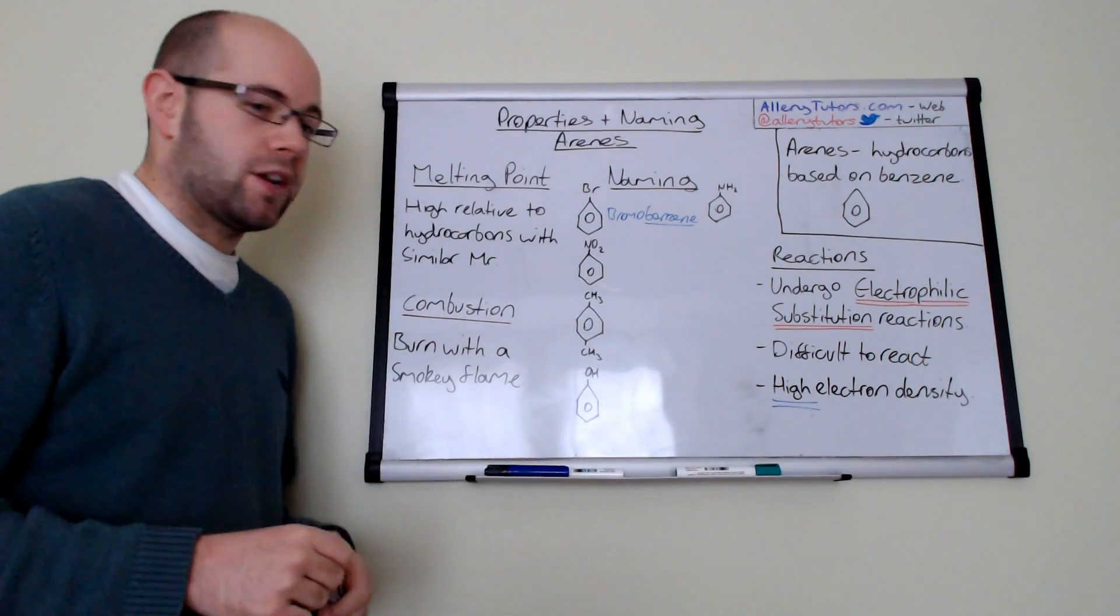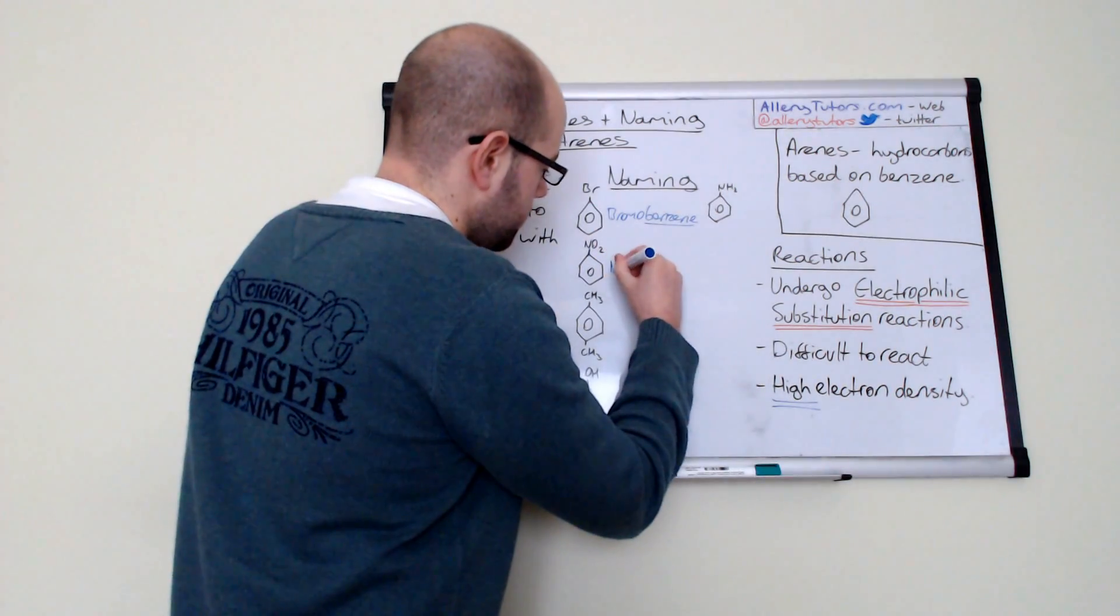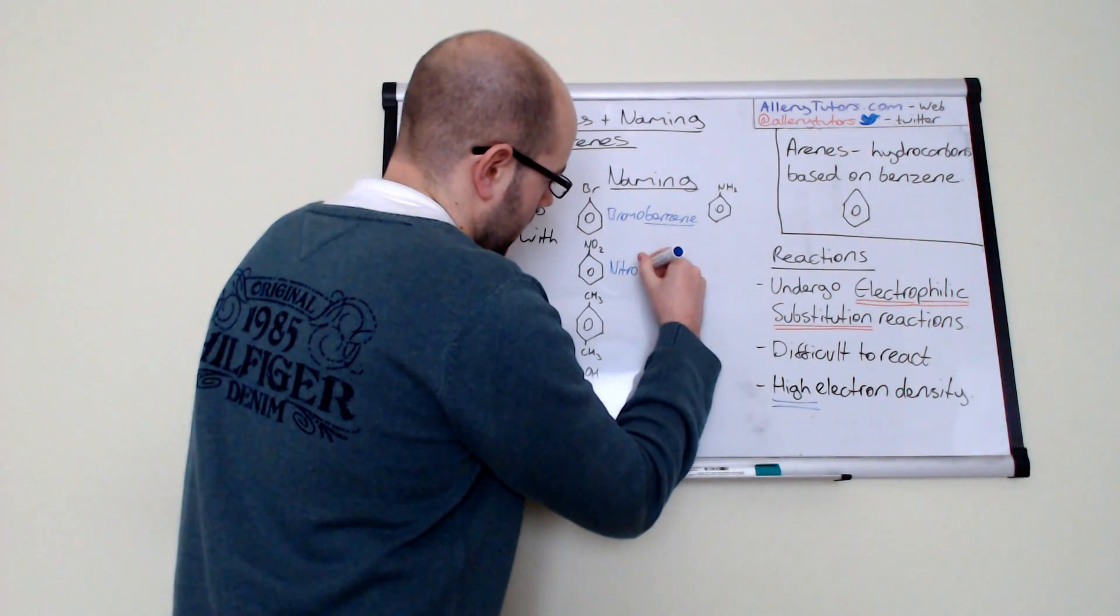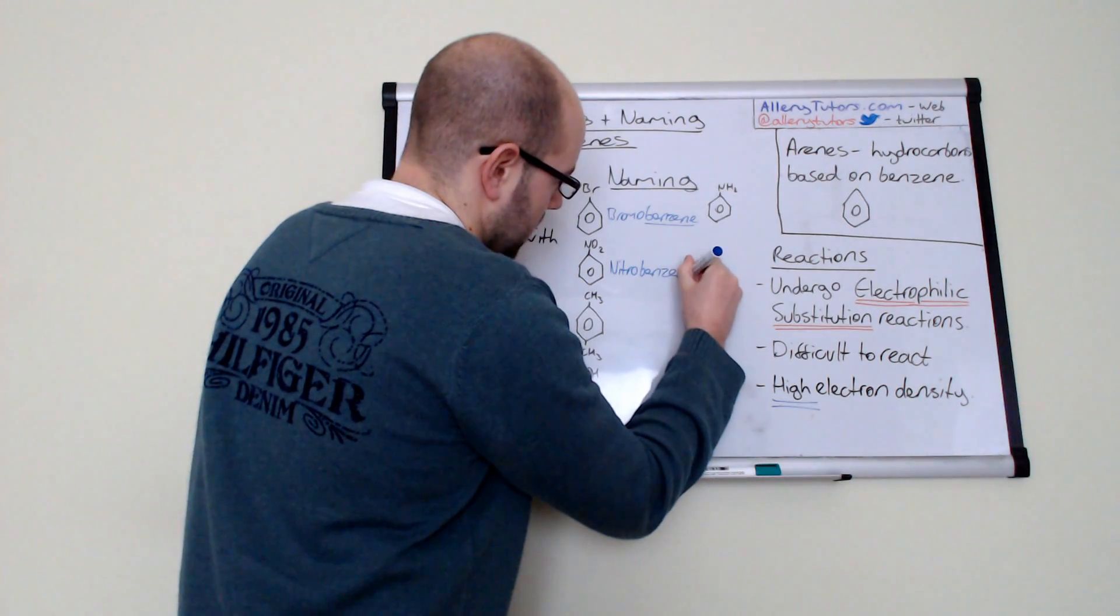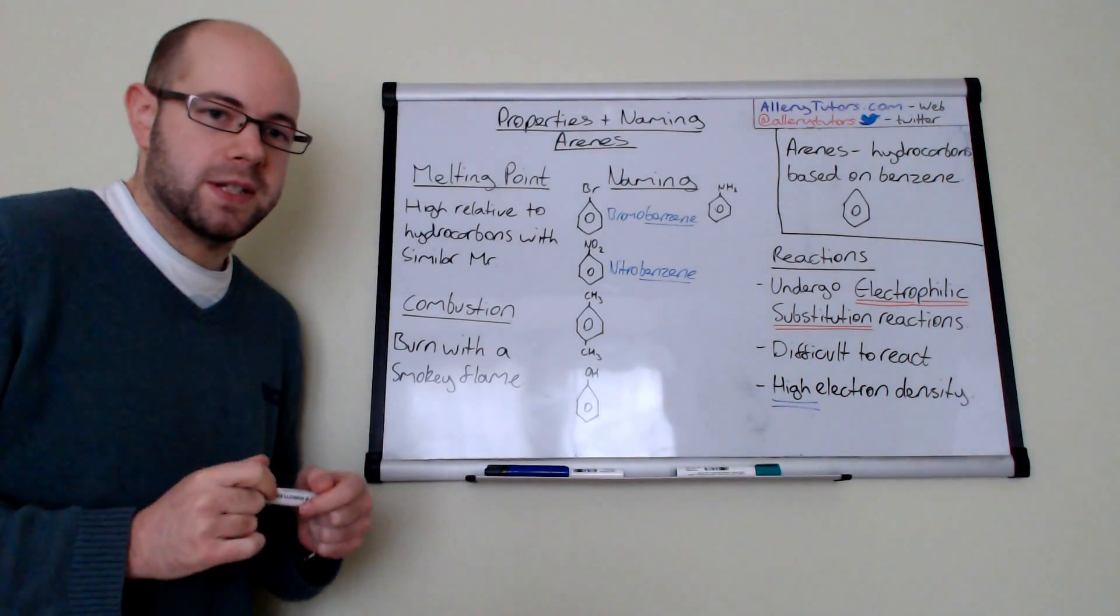This one has got a nitrate group attached to it and we call that nitrobenzene. Really easy to stick the word benzene on the end. It's a nitro group that's attached to it, so it's nice and simple.